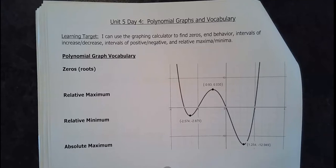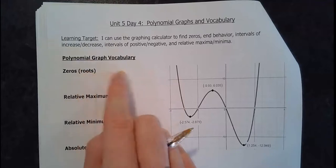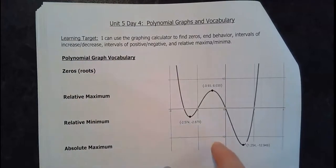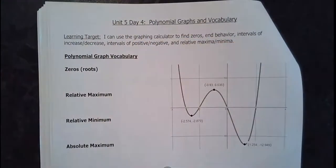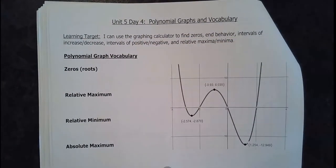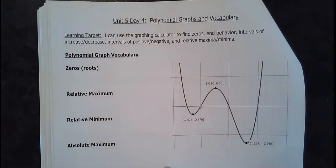I can use the graphing calculator to find zeros, end behavior, intervals of increasing and decreasing, intervals of positive and negative, and relative maximum and minima. When I say graphing calculator, you can use a graphing calculator or you could use Desmos. This picture is actually taken from Desmos — it gives a much better picture when I'm trying to make a diagram for our notes.